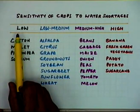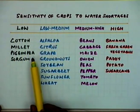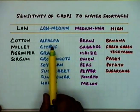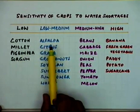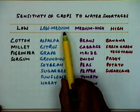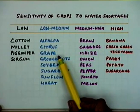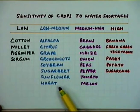Crops with low sensitivity to water shortages include cotton, millet, pigeon peas, and sorghum. Crops with slightly higher sensitivity fall into the low-medium sensitive category: alfalfa, citrus, grapes, groundnuts, sorghum, sugar beet, sunflower, and wheat.